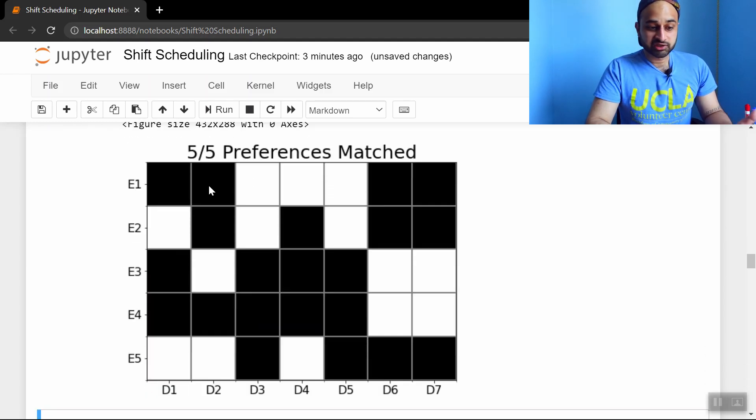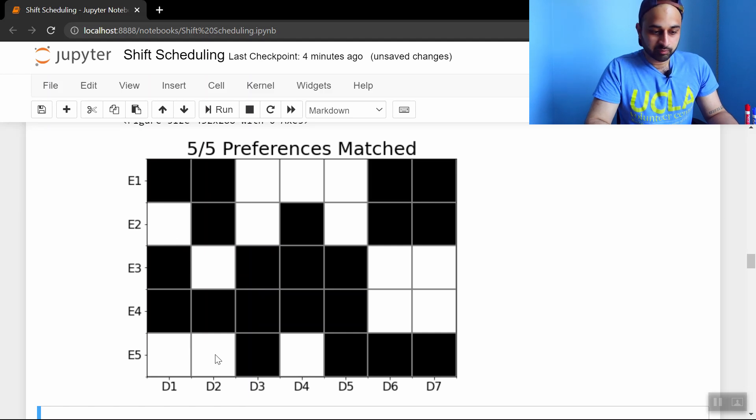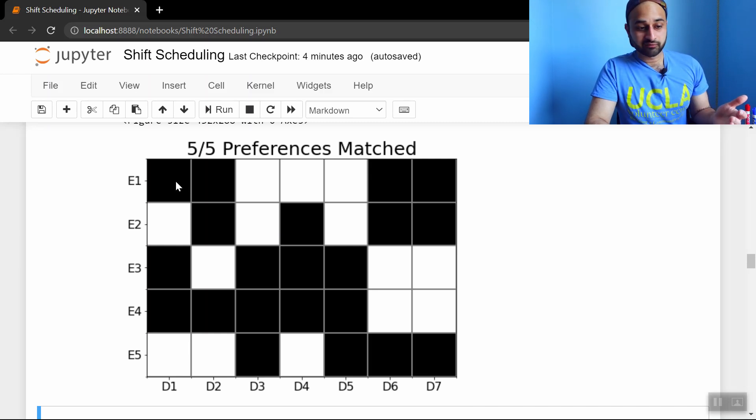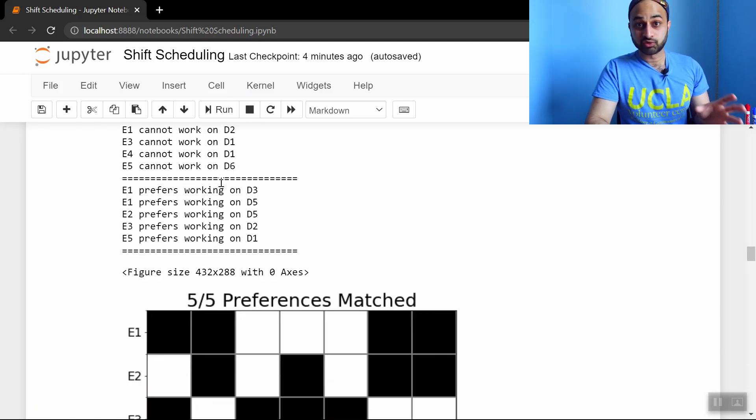And so we can see the schedule here. I've outputted it as this kind of black and white grid, where black means the person's not working that day and white means they are. We can just do a couple of spot checks. Is there two people working every single day? So one, two. Yup, good for Monday, good for Tuesday. So there's two people working every single day. And then how many shifts does each person have total? The first person has three, three, three, two and three. So the equal work is met. And if you go through all of these cannot work on certain days, you'll see those are all met as well. Super cool, but let's scale it up.